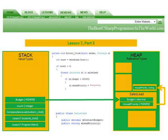Value types are stored where they are declared. On the left-hand side in the stack you'll see an integer named 'count' - because it was declared within a function and it's a value type, it is stored in the stack. However, in the heap, we've declared the SalesLead class. Because a class is a reference type and we declared 'budget' as a decimal within the class, the actual variable is stored on the heap, but there is a pointer stored on the stack that points to the value of budget in the SalesLead class.